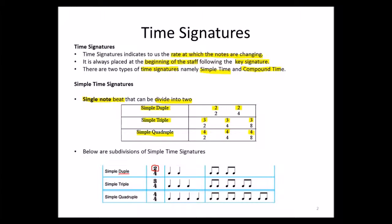Remember, duple means two. The example here is two-four, where there are two beats of crotchets — two crotchet beats — which can be further subdivided into two groups of two quavers each. That's why it's called duple time: because we have two groups of two quavers each.